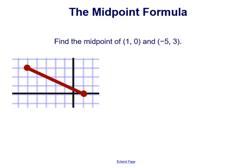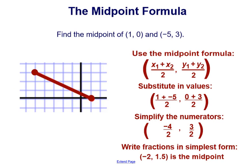Let's try one more example. Find the midpoint between the two points that form the segment: (1, 0) and (−5, 3). Using the midpoint formula, (1, 0) is x1, y1 and −5 is x2 and 3 is y2. We find the average of the x-coordinates: x1 plus x2 divided by 2 is 1 plus (−5) divided by 2. Simplifying the numerator, 1 plus (−5) is −4, giving us an x-coordinate of −2.